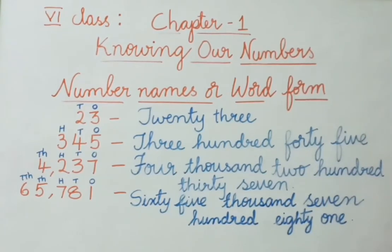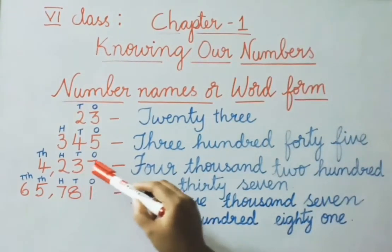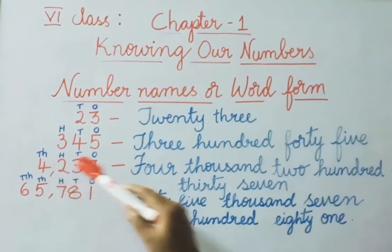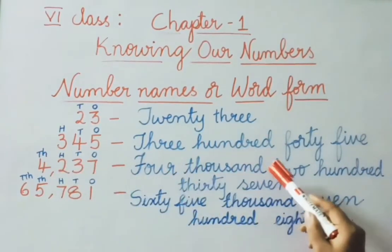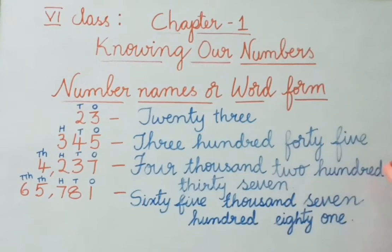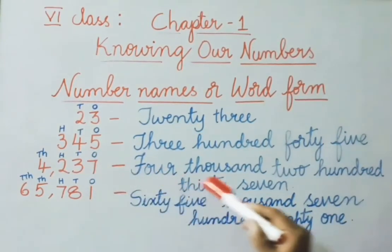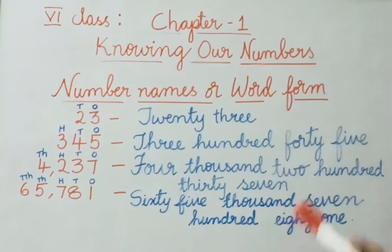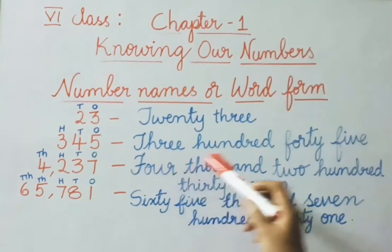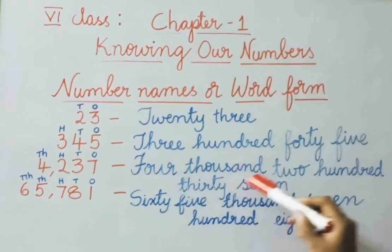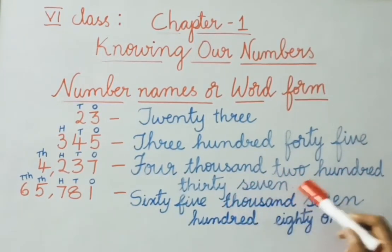See the next example — 4 digits are present. Thousands place has 4, so write 4000. Hundreds place has 2, so 200. Tens place has 3, so 30. Ones place has 7, so 7. Read the number name now: 4,237.